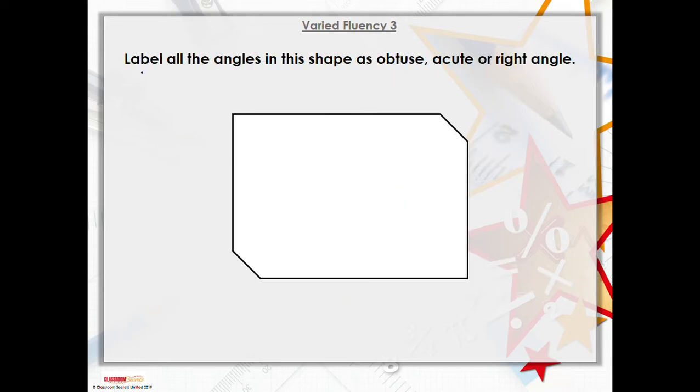Okay, the question here says label all the angles in this shape as obtuse, acute or right angles. You can see there's lots of parts of the shape here where the two lines will meet. In the corner here, top left corner, you've got a right angle.